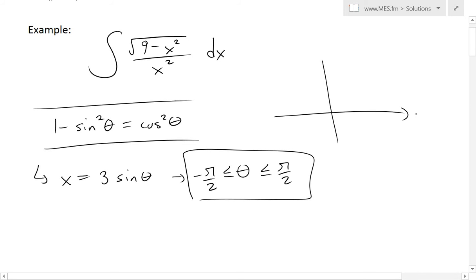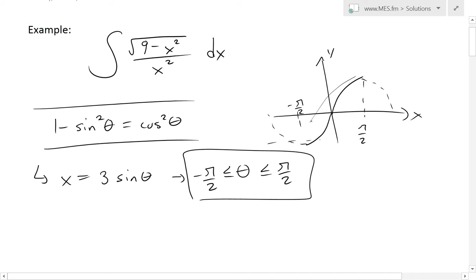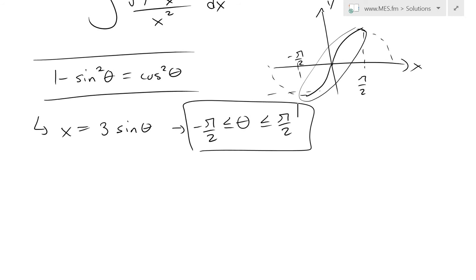We have to define the region that theta is in. The reason we use negative pi over two to pi over two is that if you draw the sine curve, later it goes down and it won't be one-to-one across the full range. So this range, negative pi over two to pi over two, is used because when you invert it, it needs to be a one-to-one function. Make sure to watch the one-to-one function videos linked below.